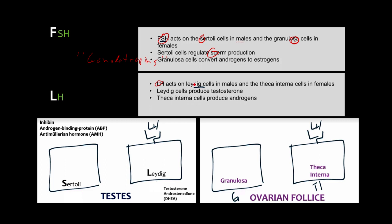LH acts on the Leydig cells in males and the theca interna cells in females. In both cases, these cells produce androgens — in males it's testosterone, and in females they're called weak androgens. A memory trick: draw an L, flip it upside down, and it looks like a T — so Leydig cells make testosterone.